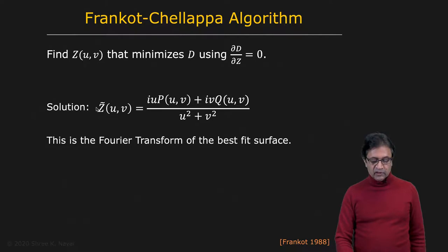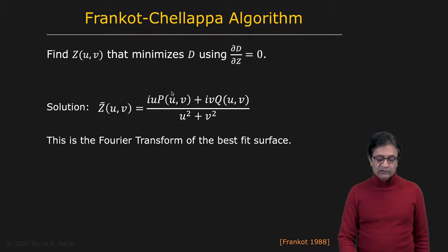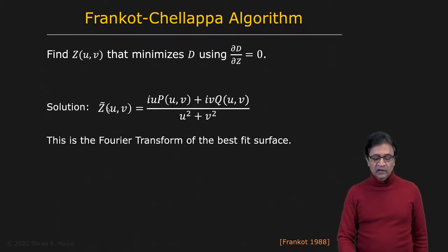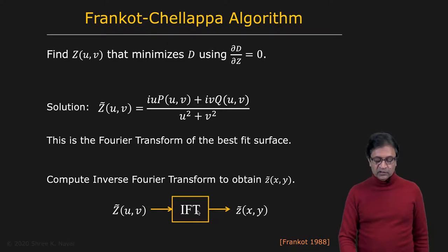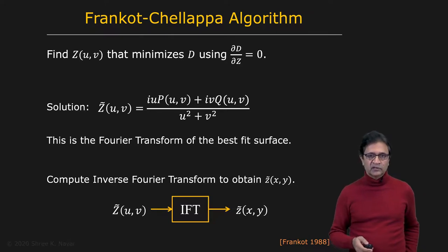The solution states that the Fourier transform of the least-squares z is: Z(u,v) = [i·u·P(u,v) + i·v·Q(u,v)] / (u² + v²). Since P(u,v) and Q(u,v) are already measured, you plug them in to get Z(u,v), then take the inverse Fourier transform to recover the surface z(x,y). It is a very simple and elegant solution to the surface reconstruction problem.